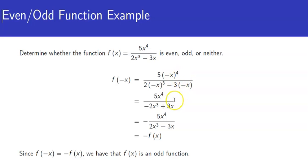Well, negative x to the 4th is the same thing as x to the 4th, so we just get 5x to the 4th on top.